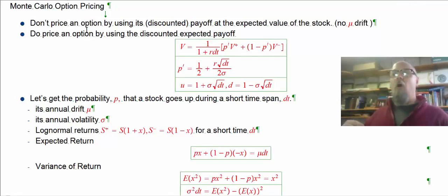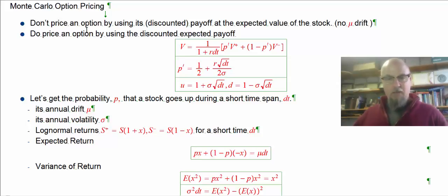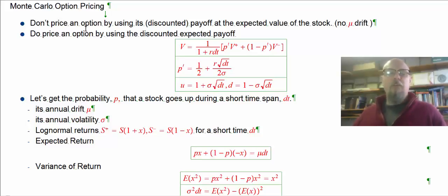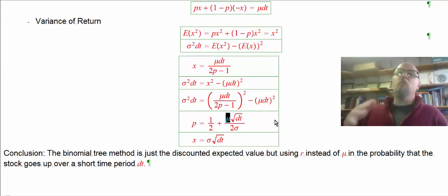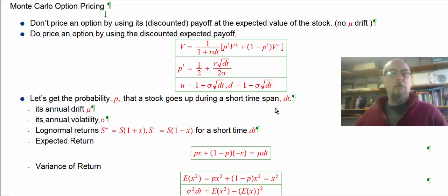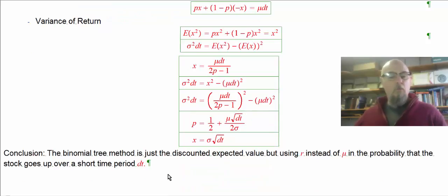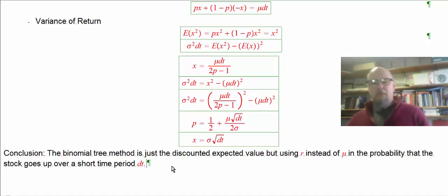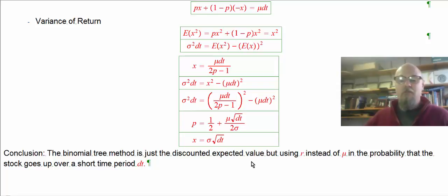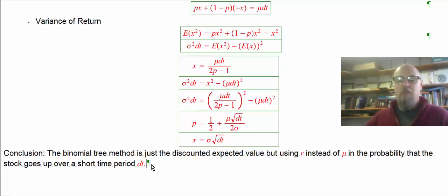Remember I said we can't price options by just taking the expected value of the stock and figuring out the option value at that expected value. We have to use the risk-neutral expected value. The only difference is replacing mu — the actual drift rate — with r, the risk-free rate of return. So the binomial tree method is basically discounted expected value, but using r instead of mu in the probability that the stock goes up over a short time dt.